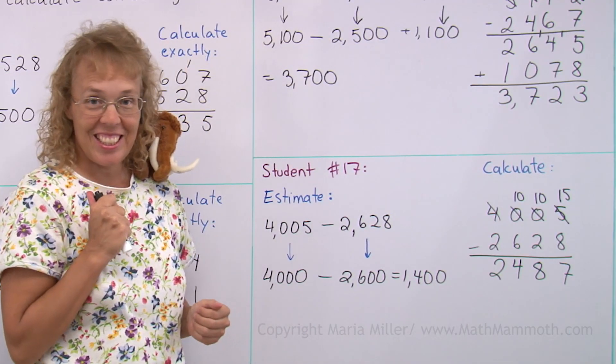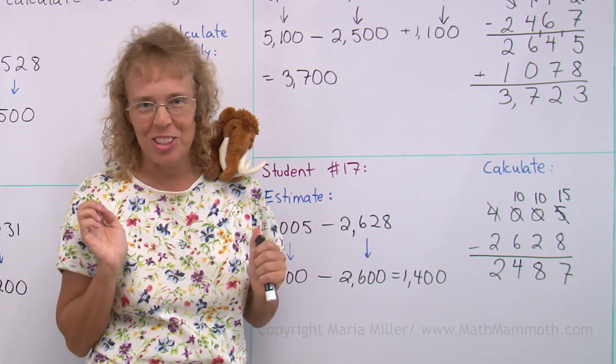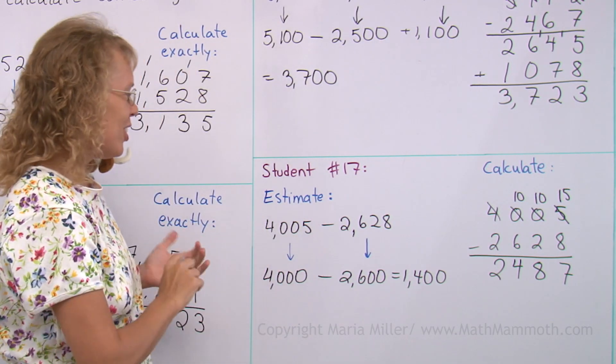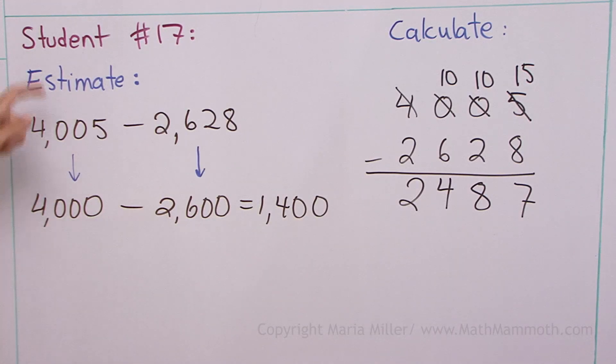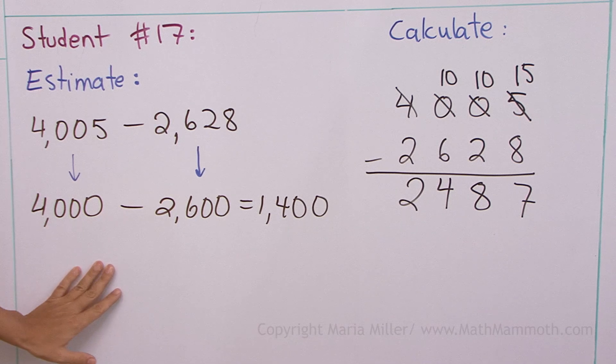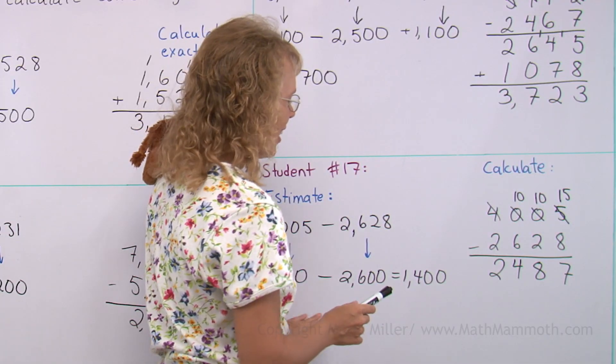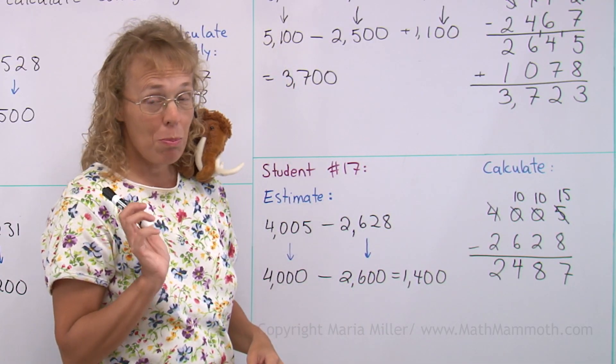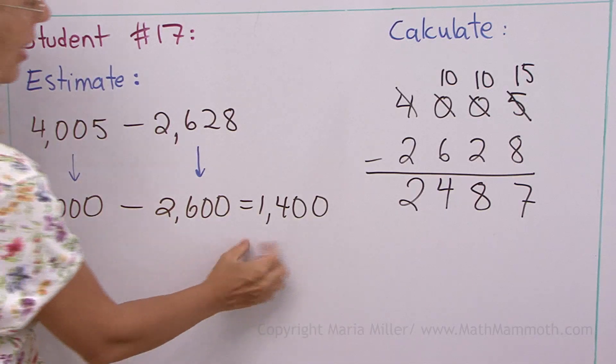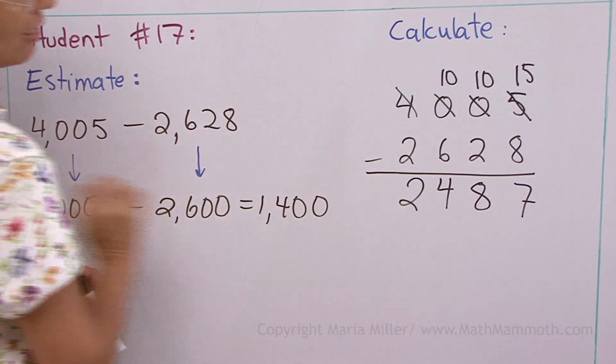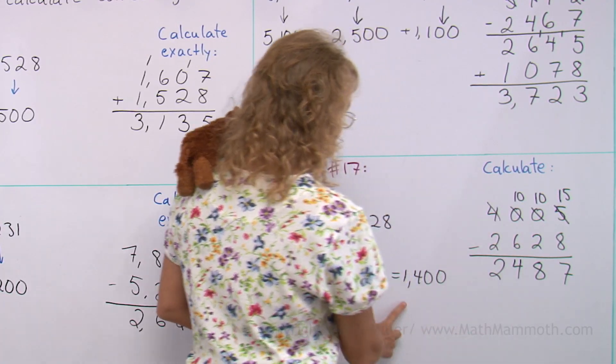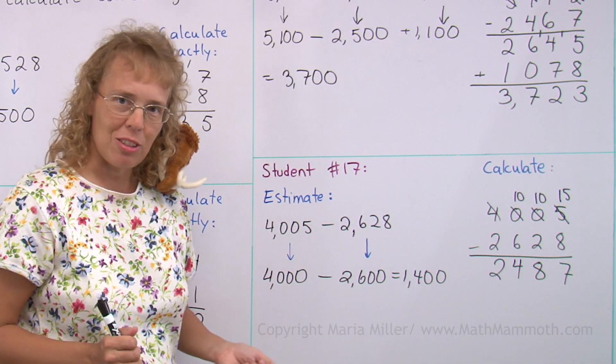Now, lastly, you get to be a teacher detective, so to speak. This is what teachers often have to do. Here's one student's work, student number 17. But there's something wrong here, you know? And even the student could have spotted it because the estimate here is very far from his or her answer. You see? 2,400 something and 1,400. Something's wrong.